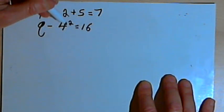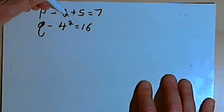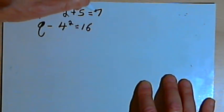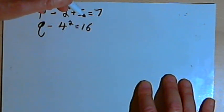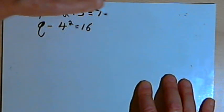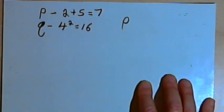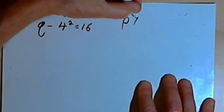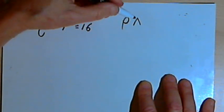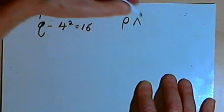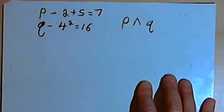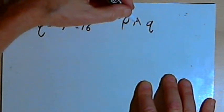I want to combine both of these into one compound statement — 2 plus 5 equals 7 and 4 squared equals 16. Using logic symbols, I'm going to write P, then what looks like an upside-down V. This is called a conjunction symbol and we read it as AND. Then I'll write Q, the second statement. So now I've got P and Q.